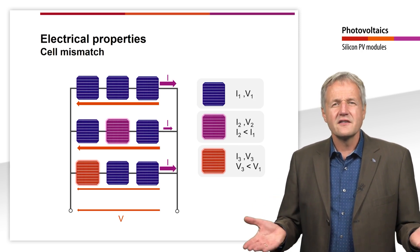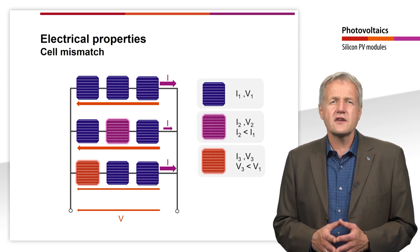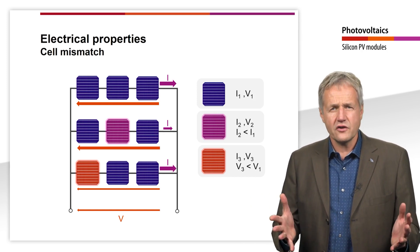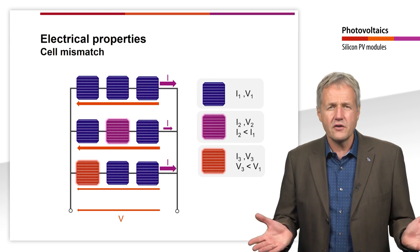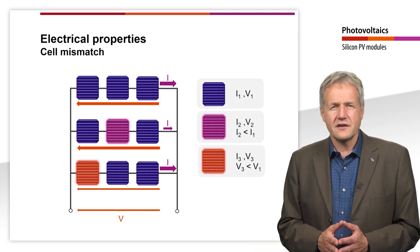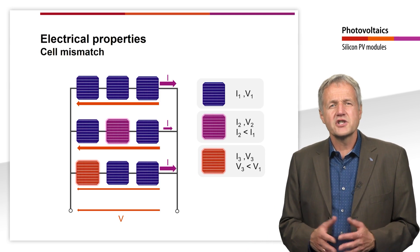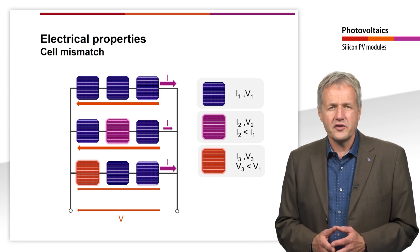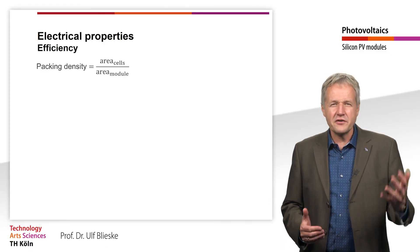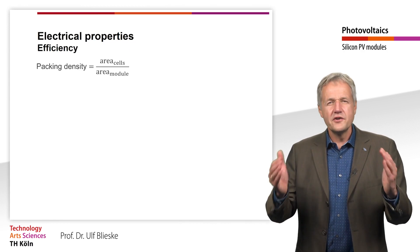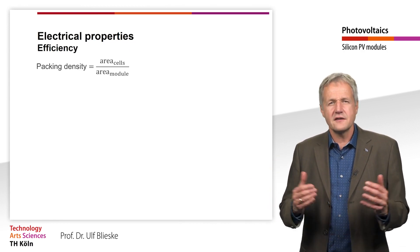In practice, the cells are therefore pre-sorted according to similar short circuit current and open circuit voltage before being connected to form cell strings, in order to keep the cell mismatch as low as possible. In addition, the efficiency also decreases due to the packing density of the cells in the module.